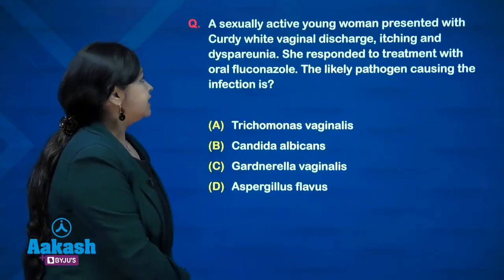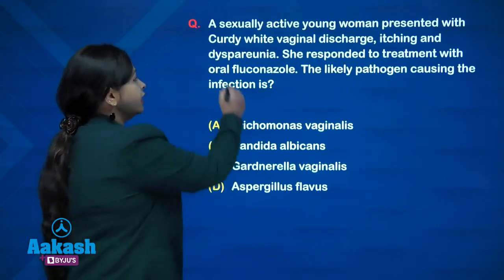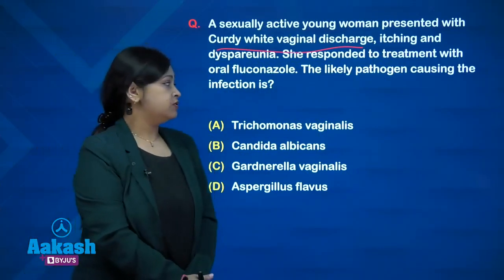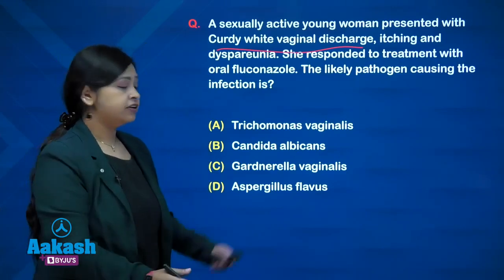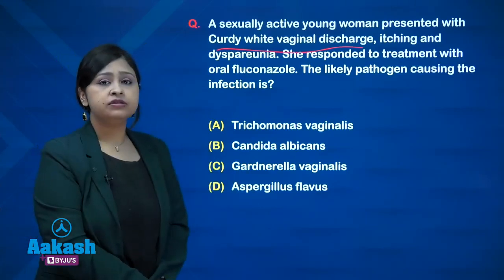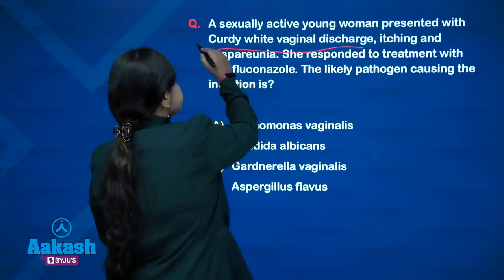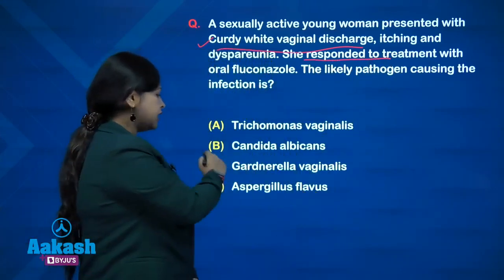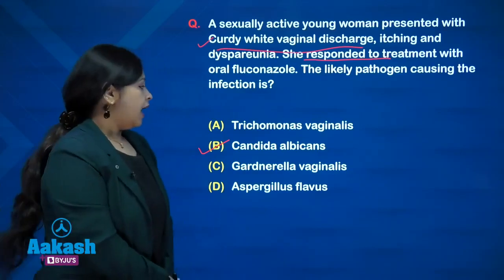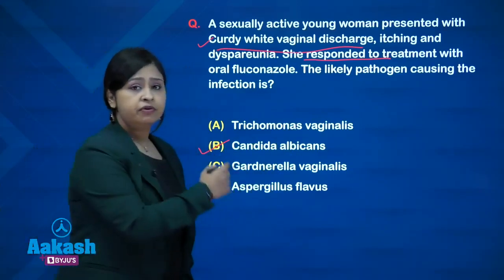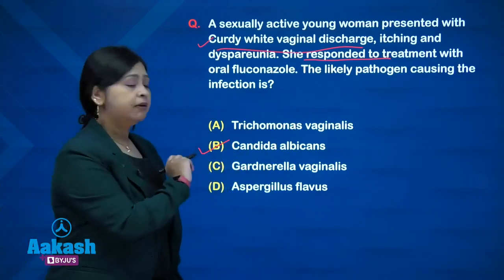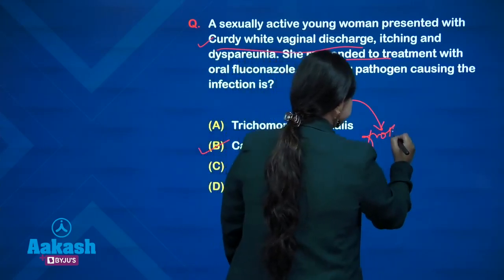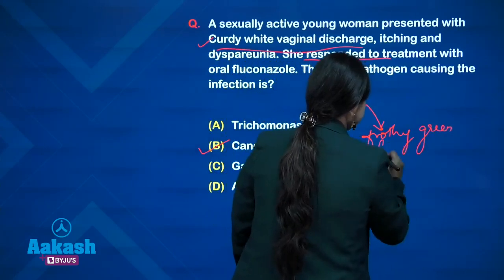Let us see this question: a sexually active young woman presented with curdy white vaginal discharge, itching, and dyspareunia. She responded to treatment with oral fluconazole and the likely causative agent could be — so here you have two clues: first is the curdy white vaginal discharge, and second is that she responded to an antifungal. Hence your answer is Candida albicans. The other option, Trichomonas vaginalis, causes a similar infection but with a frothy green foul-smelling discharge.